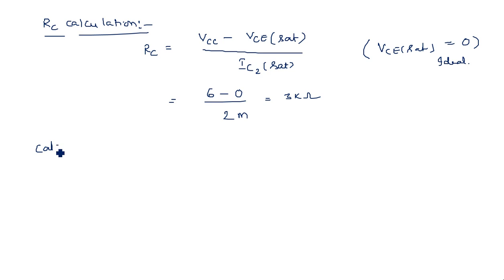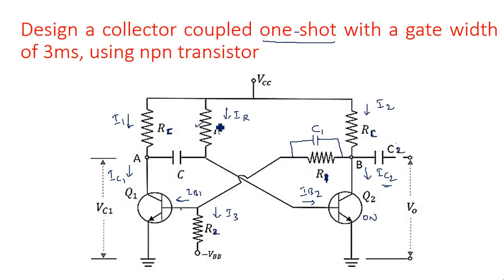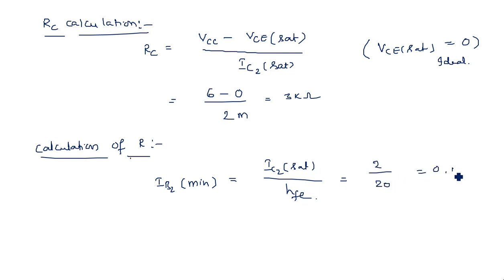Calculation of R (from VCC to the capacitor): IB2 minimum = IC2 sat / hFE = 2 mA / 20 = 0.1 mA. Since the transistor in cutoff has no current flow, we work on the right-hand side of the circuit.